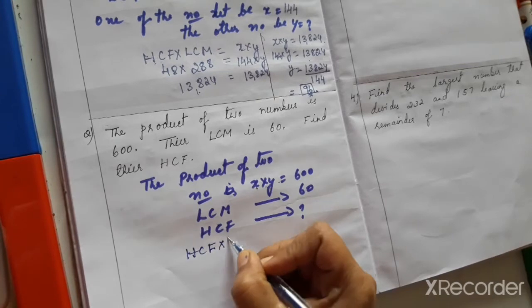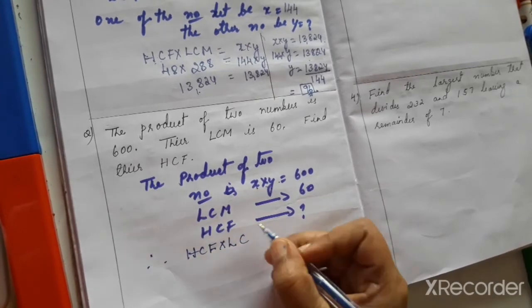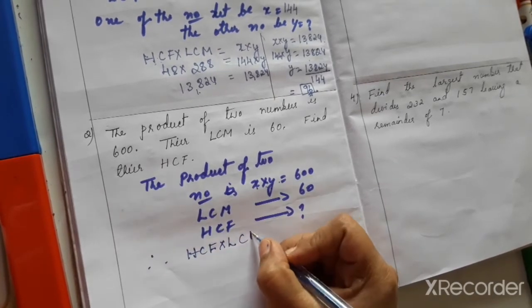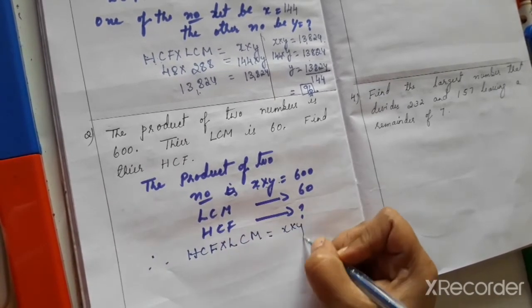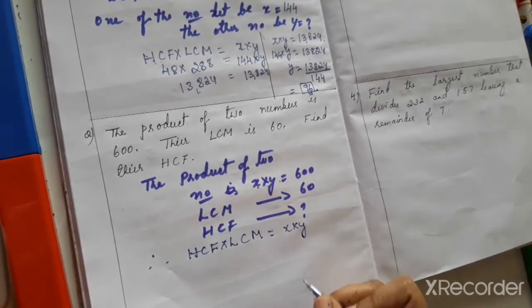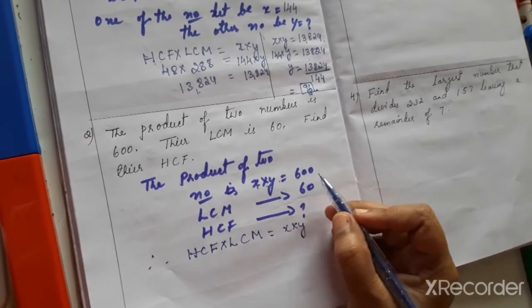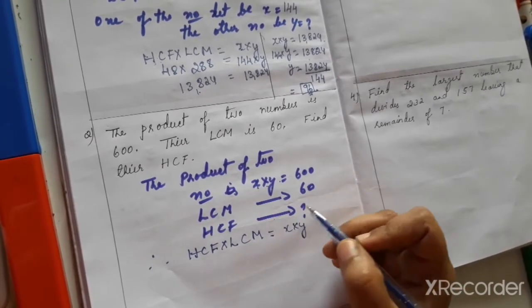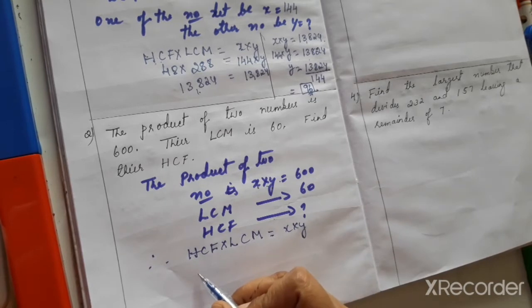HCF × LCM is equal to the product of any two numbers. Now we have to find the HCF.